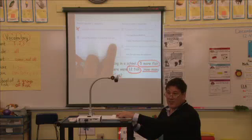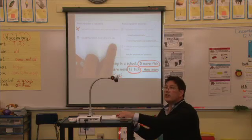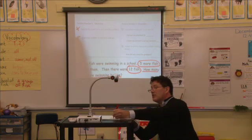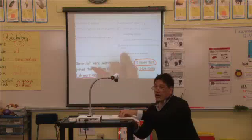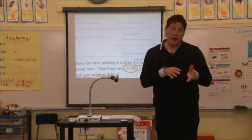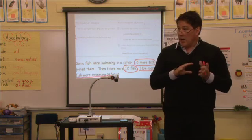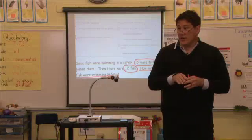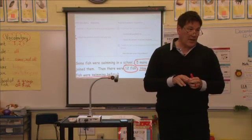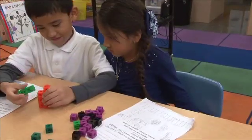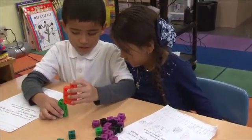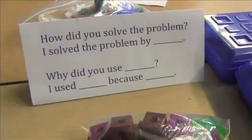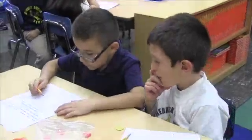First you're going to explain to your partner how you found your answer, and your partner is going to listen carefully. Remember we talked about that? And then you can ask your partner questions about how they solved their problem. Students have an opportunity now to share their thinking with their table partners. To facilitate this conversation, I provided students with discussion stems that help them formulate and verbalize their questions.